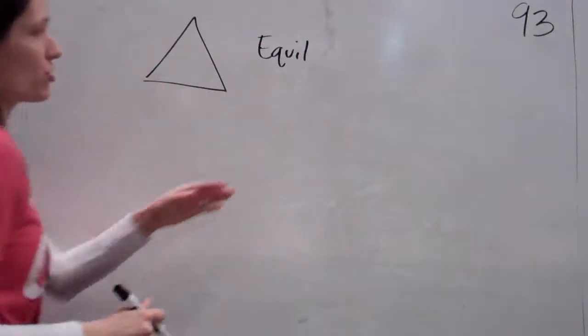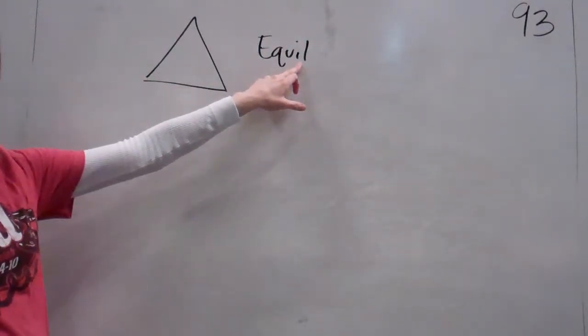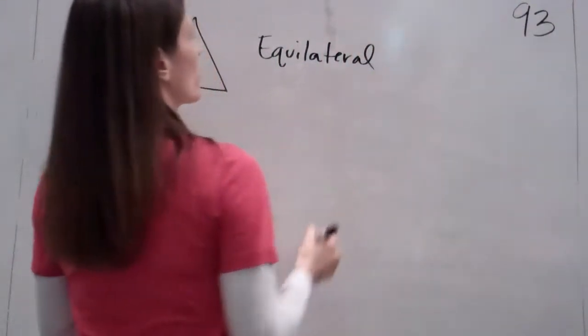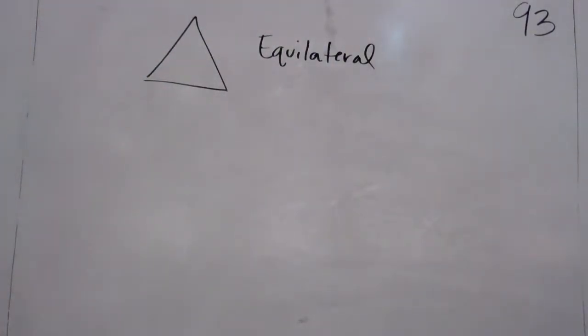Equal, isn't that weird that you change it to equal? Is it an equal with an A? Just saying. Lateral, equilateral triangle, and what does this mean that it's equilateral? All the sides are equal. Every single one of them.